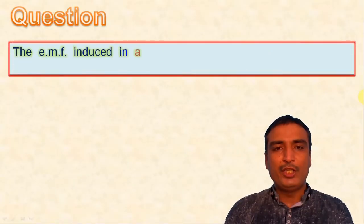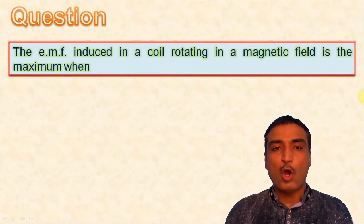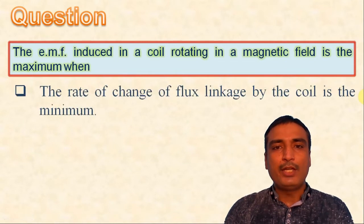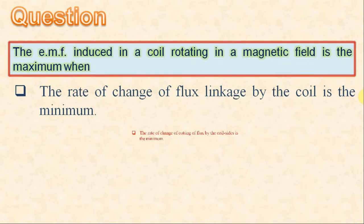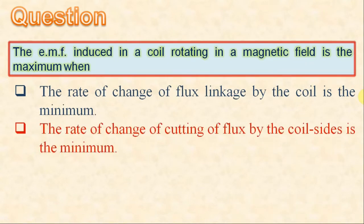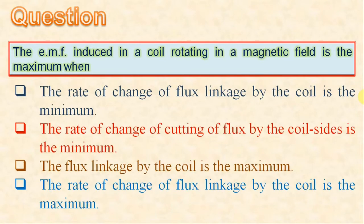The EMF induced in a coil rotating in a magnetic field is the maximum when: the rate of change of flux linkage by the coil is the minimum; the rate of cutting of flux by the coil sides is the minimum; the flux linkage by the coil is the maximum; or the rate of change of flux linkage by the coil is the maximum.